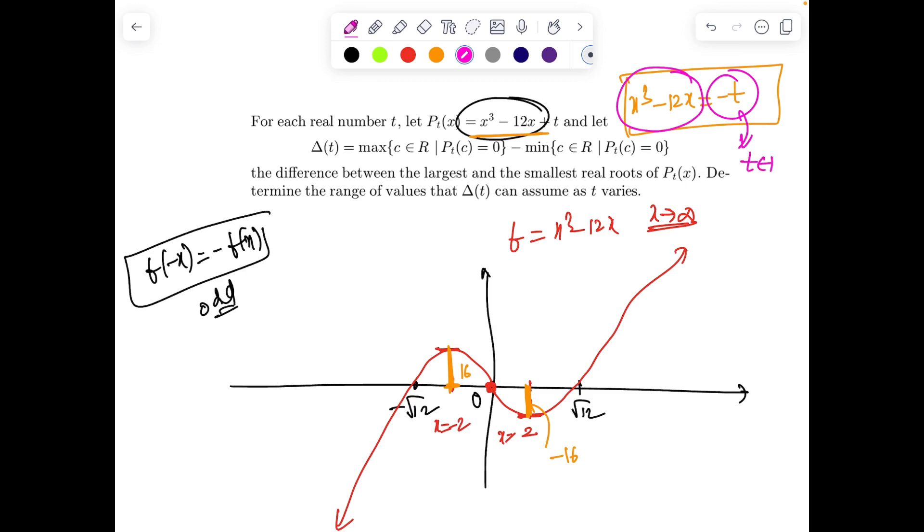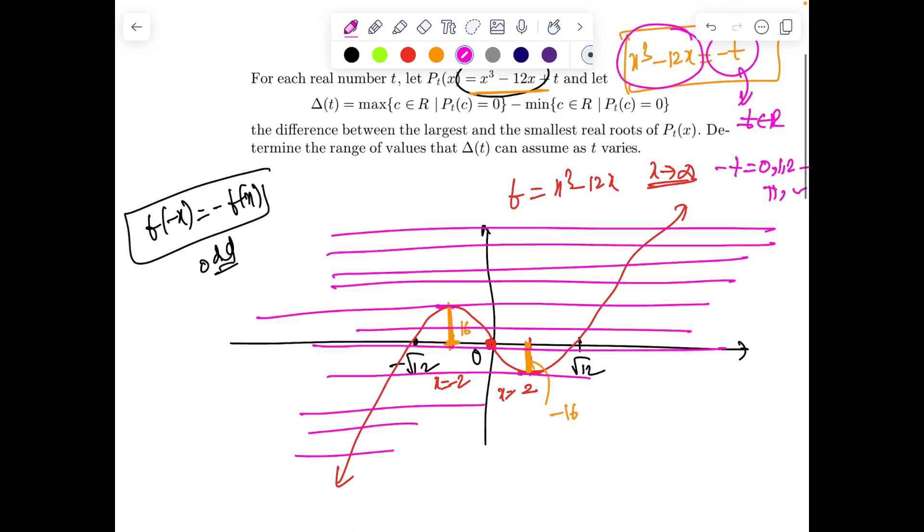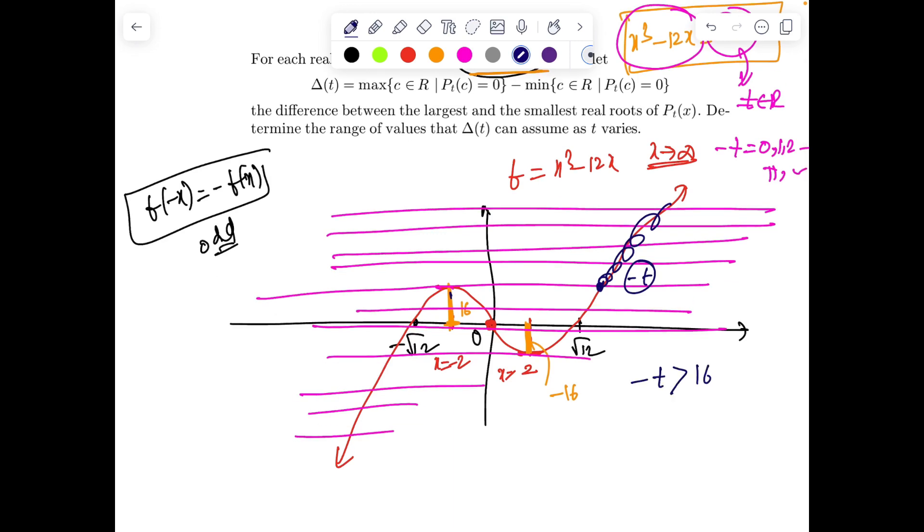So now I can write this expression as x³ - 12x = -t. So for particular t, we need the number of point of intersection of this curve with -t. Now -t is anyway a real number, because if t is real, -t is real. So -t can take a value of let's say 0, 1, 2, 3, π, e, or anything. Now you can clearly see, since -t will be a constant value depending upon values of t, the number of point of intersection with the given curve will be either 1, 2, or 3.